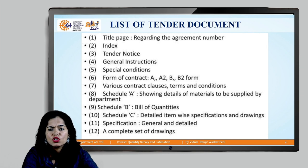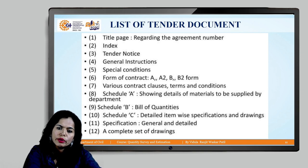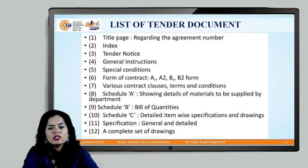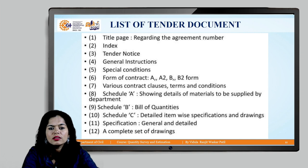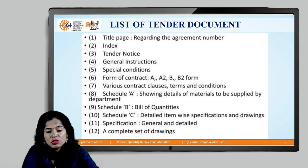Schedule C, similar to Schedule A, lists the equipment supplied by the department. Next are detailed drawings and specifications. Drawings provide actual dimensions of the project. Specifications describe the class of work — for example, for brickwork there are Class 1 and Class 2, specifying the process of execution. The specification is common for a particular department. There is also a general specification and a detail specification — the detail specification mentions which quality of material to use and how it is to be executed.